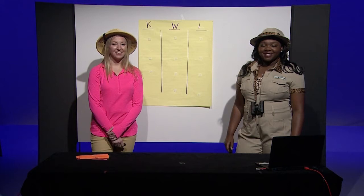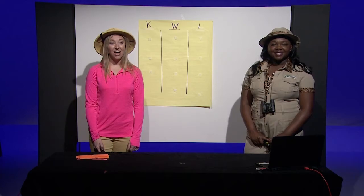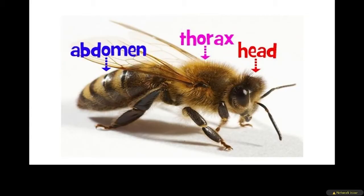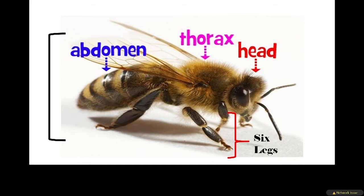Can you name the common characteristics of all insects? Head, thorax, abdomen, and six legs. Exoskeleton, two antennae, and sometimes wings.